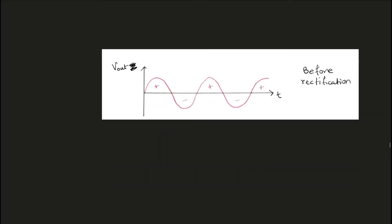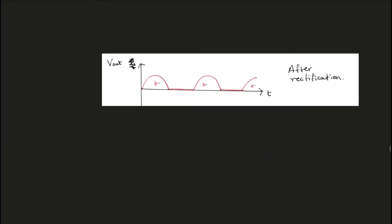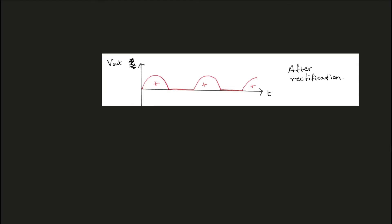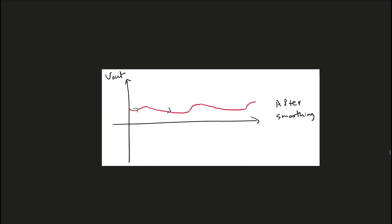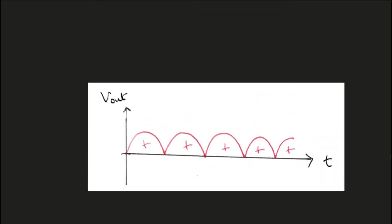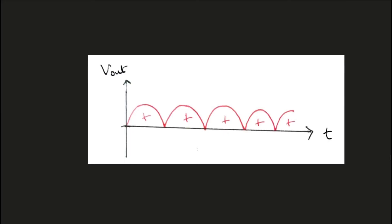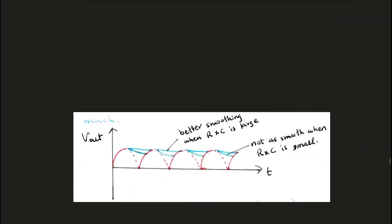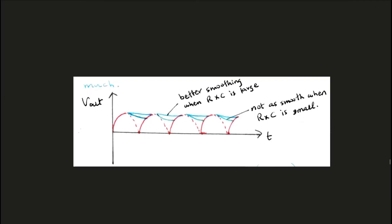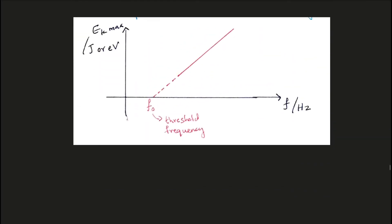This graph shows what the graph of alternating voltage or alternating current looks like before it has been rectified. This graph shows what that same voltage looks like after half-wave rectification. This graph shows what happens to the graph after the half-wave rectified current has been smoothed out using a capacitor. This graph shows the same alternating current if you apply full-wave rectification to it. This graph shows what the graph will look like after you apply smoothing to full-wave rectification.